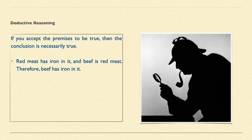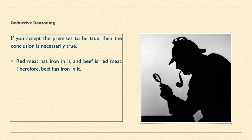If you argue that red meat has iron in it — which is premise one — and then it leads us to a second claim, which is that beef is red meat, it would follow that if those two premises are believed to be true,